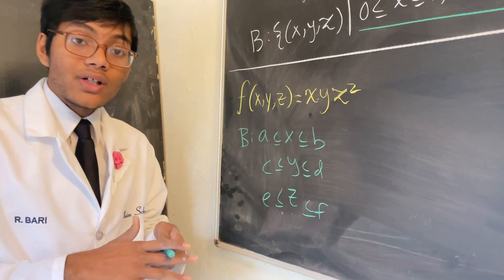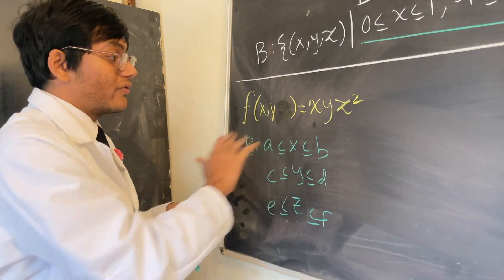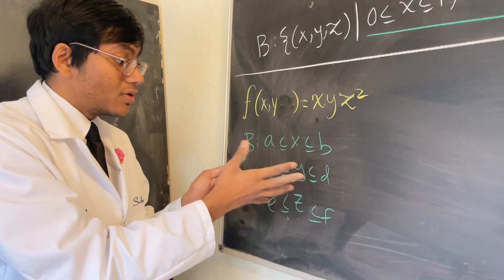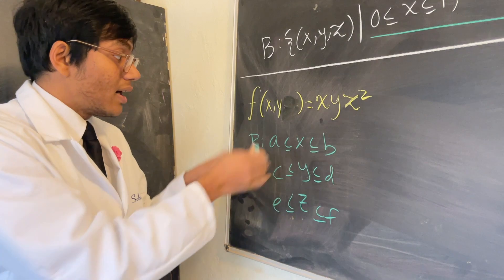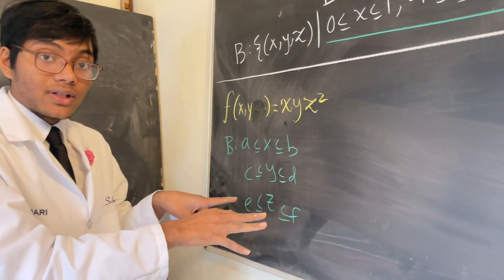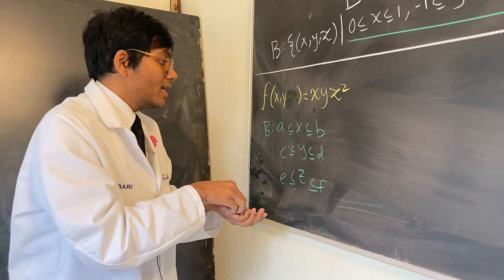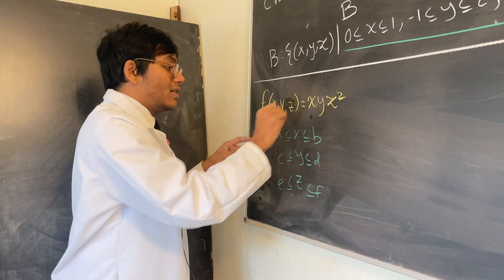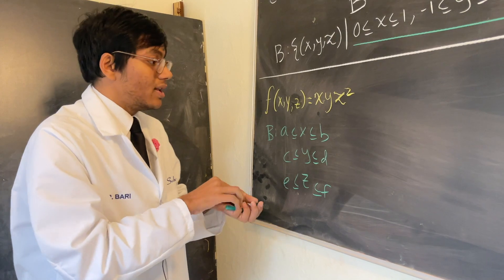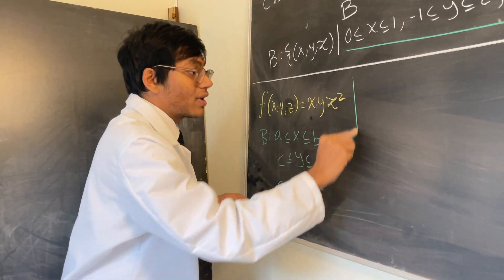In double integrals you're trying to integrate a three-dimensional function over a two-dimensional area. In 3D integrals you have one more dimension for each—you have a 4D function and you have a 3D volume that you're integrating over.